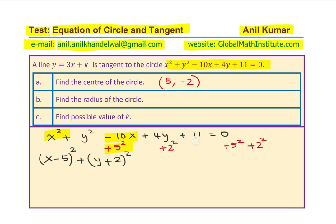We have +11, which we take to the right-hand side. On the right-hand side we have 5² and 2², and we subtract 11. So we get the equation of the circle as (x − 5)² + (y + 2)² = 5² + 2² − 11. From here you can easily get all the parameters — the center is at (5, −2) as we had thought.